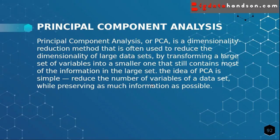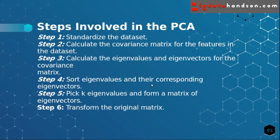In Principal Component Analysis, you want to reduce the number of variables. There are steps involved. Step one is to standardize the dataset — using Standard Scaler, we fit the standard scaler into our dataset. Step two is to calculate the covariance matrix for the features in the dataset. What is covariance? We have seen variance — variance is the spread of data.